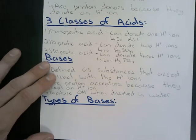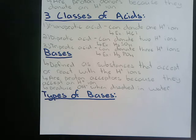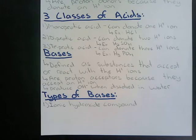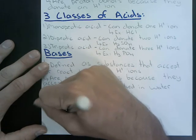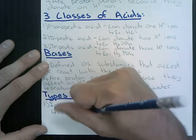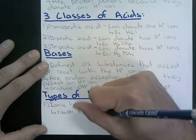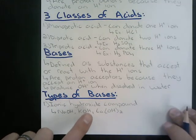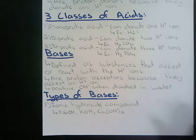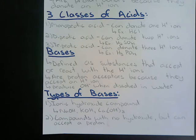We can also classify bases into two general categories. The first category is ionic hydroxide compounds, which include things like sodium hydroxide (NaOH), potassium hydroxide, or calcium hydroxide. Notice how they all contain OH or that hydroxide group. We can also have compounds that don't contain hydroxides but can still accept a proton. An example would be NH3, ammonia.